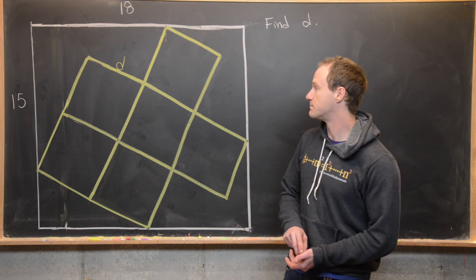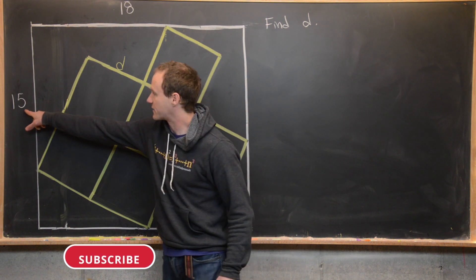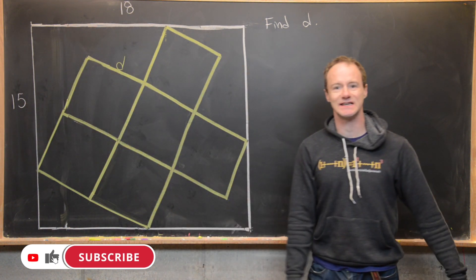Here we've got a nice little geometry problem. So let's say we've got a rectangle with side length 15 units and 18 units.